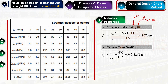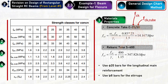The bar diameters are chosen based on experience, available rebars on site, and can be modified later. For this example, the stirrups are taken as Ø8.